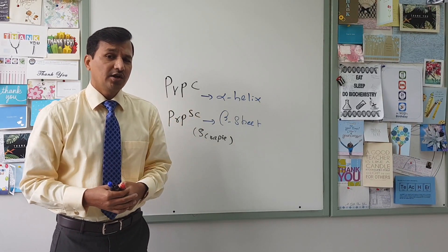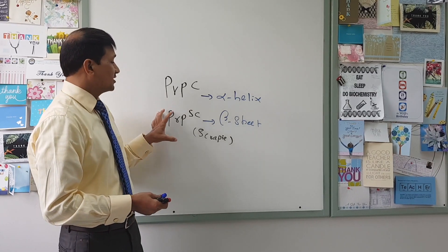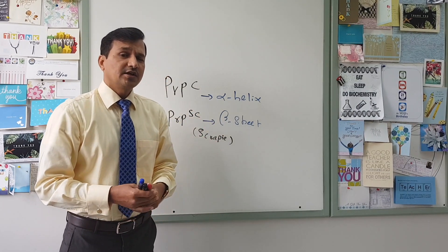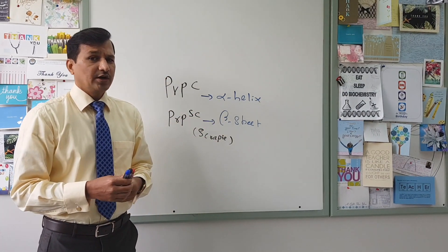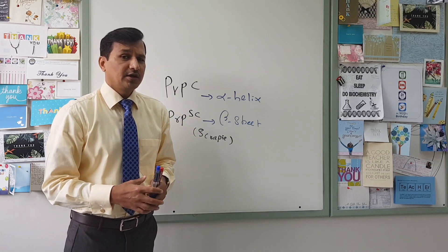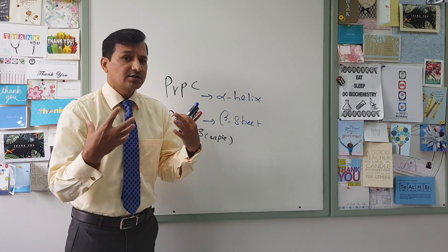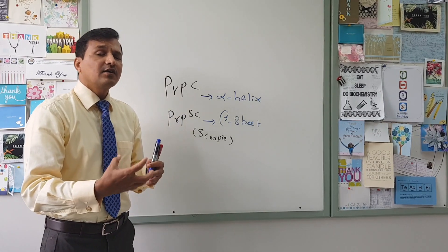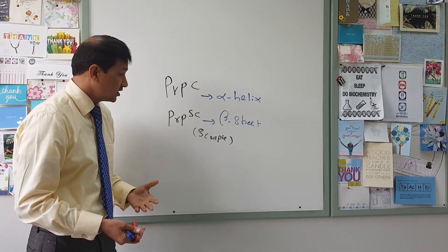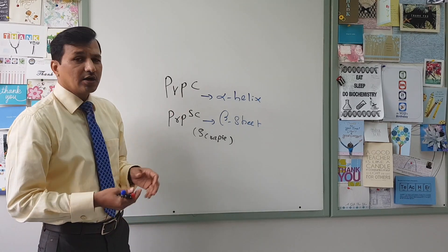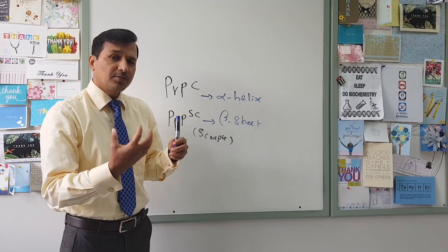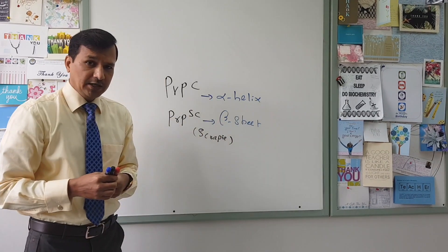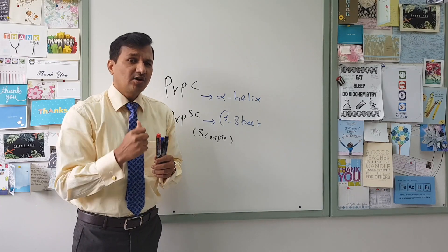This change occurs whenever the disease-causing prion protein enters our body, or whenever there is a mutation going on in the gene coding for PRP — the prion protein gene. Because of this mutation, or because of the entry of disease-causing prion protein in an infectious way, PrPC normal prion protein is converted into PrPSc, where alpha helix is converted into beta sheet. This is the disease-causing prion protein.